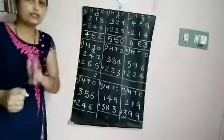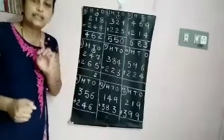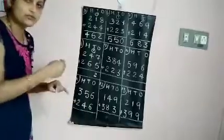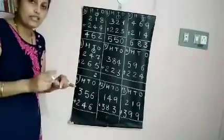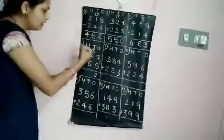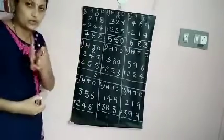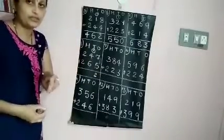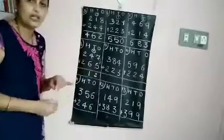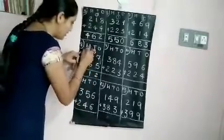Here again you have got 2 digits — that is 11. So what you have to do here? Carry that 1 hundred to the hundreds column. You have got 2 digits: 1, 1. So, write 1 ten in the tens column and carry the hundred to the hundreds column.